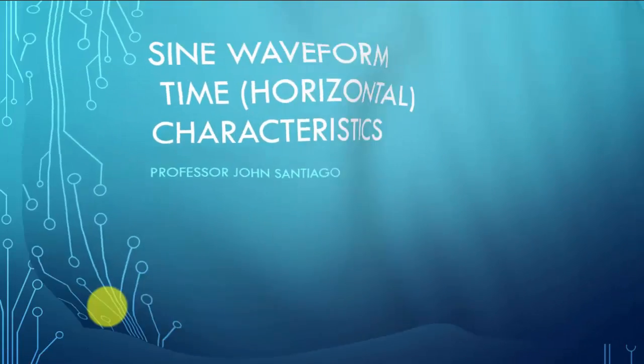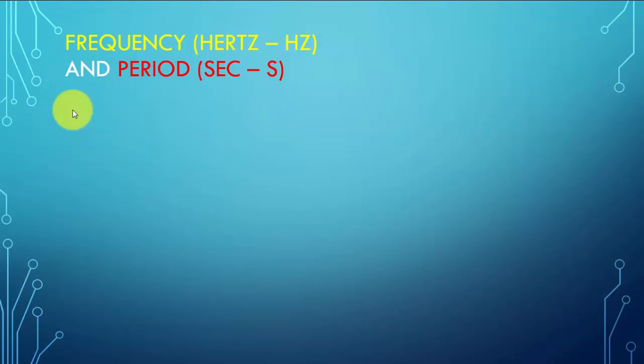The sine waveform has horizontal characteristics, and we'll see how the frequency, which has units of Hertz (cycles per second), and period are related. The frequency is related by f = 1/T, where T is the period, which I'll show you what that means. We have another expression which can be derived from the first one, where the period T equals 1/f.